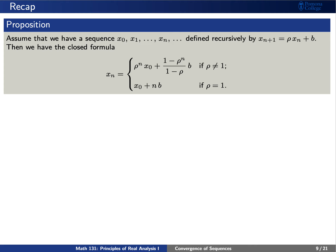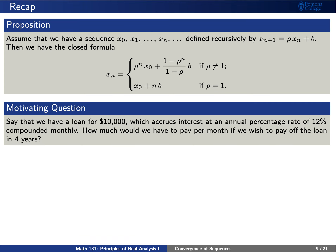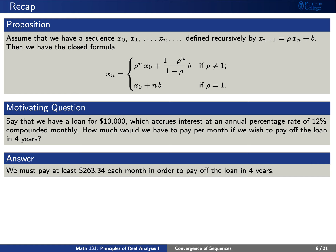Here's a closed form expression from our recursive relation: x sub n equals rho to the n times x zero, plus (1 minus rho to the n) divided by (1 minus rho) times b. Plugging in n equals 48, rho equals 1.01, and x zero equals 10,000, and setting x sub n to zero and solving for b, we find that we must pay off at least $263.34 each month. What's most important is this formula for x sub n.